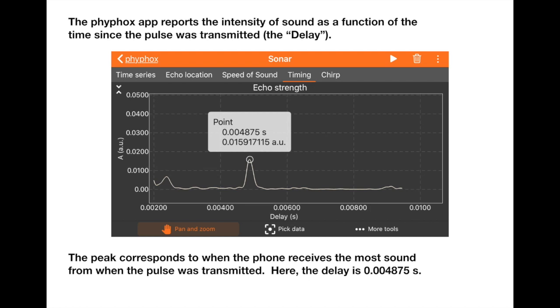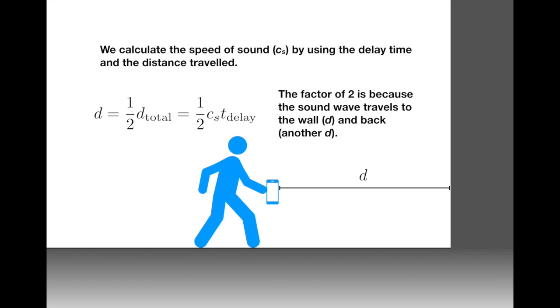This is essentially giving you how much noise the phone is hearing after it transmits the pulse. The peak corresponds to when the phone has received the most sound from when the pulse was transmitted and we'll learn how to measure the delay time precisely, but in this case we measure it at 0.004875 seconds. We will measure the speed of sound using a kinematic analysis.